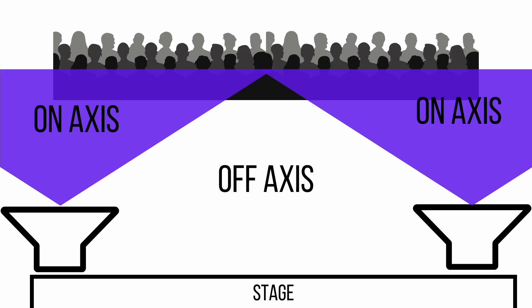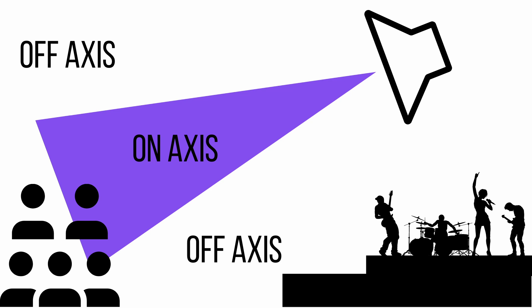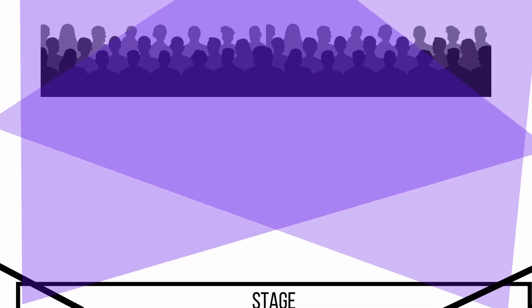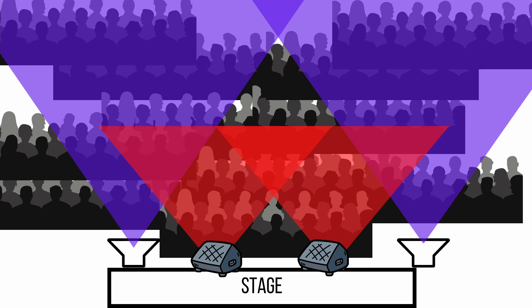Different speakers have different characteristics of throw — the area they cover, usually given in an angle. If your speaker has a 90-degree angle and is placed on the side of your stage, part of that speaker may actually be playing onto the stage. Think about the coverage — make sure you're covering your audience and not the stage with your speakers.